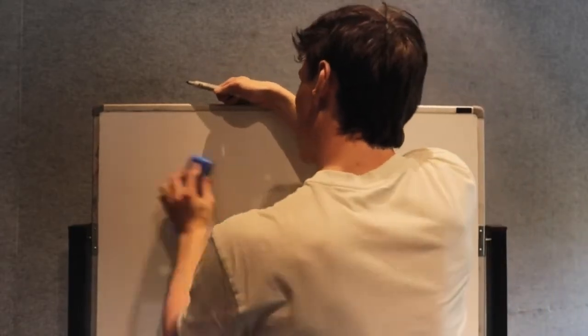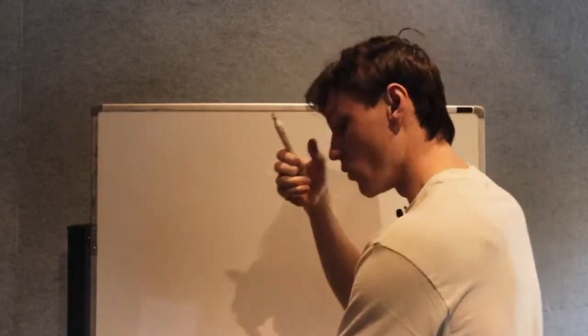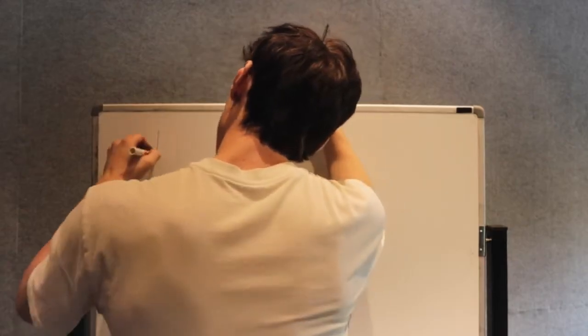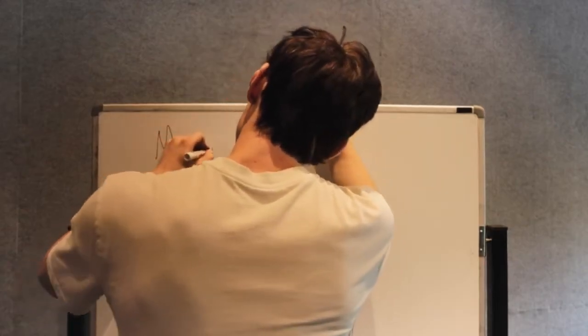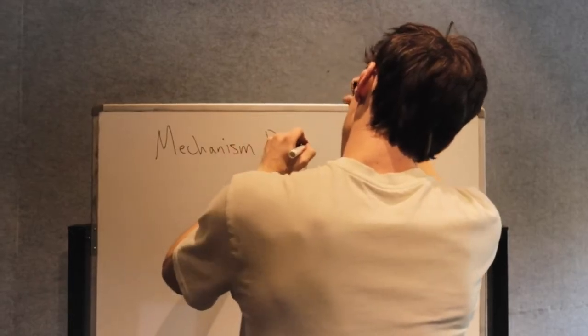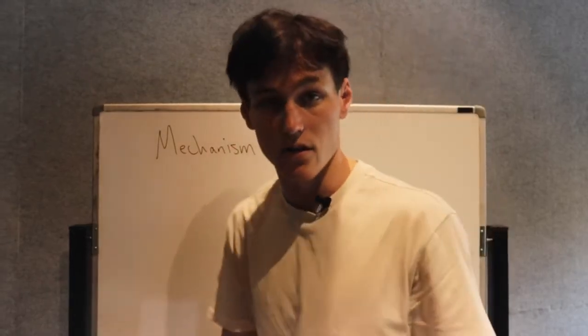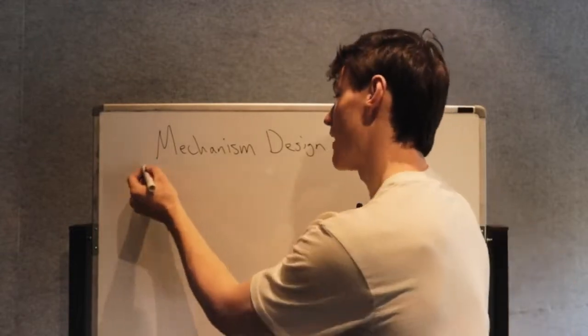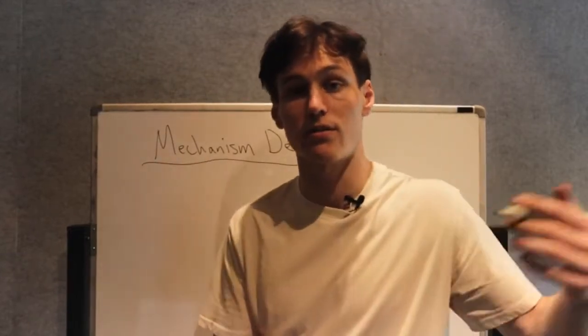Game theory is just one side of the coin. Game theory is where you're studying decision making, studying strategy given games as constants. Mechanism design is the other side of the coin — taking behavior as a constant, taking rationality as a constant, and then designing games to get certain outcomes.